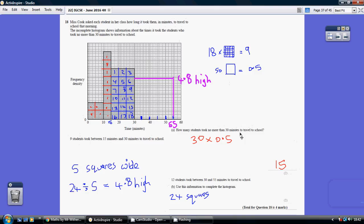So how many students took no more than 30 minutes to travel to school? I add up the number of 5 by 5 squares I've got up to 30 minutes. So here, here and here. And that is 30 squares. Each of those 5 by 5 squares represents half a student. So 15 students.